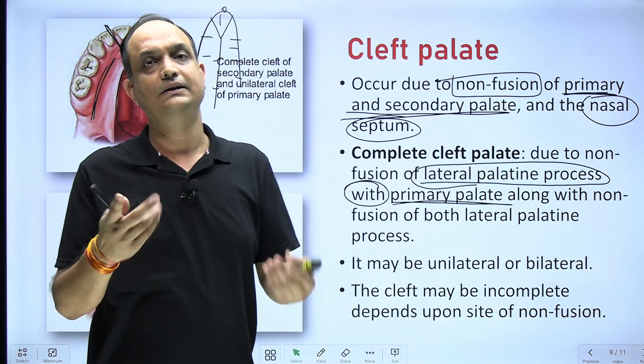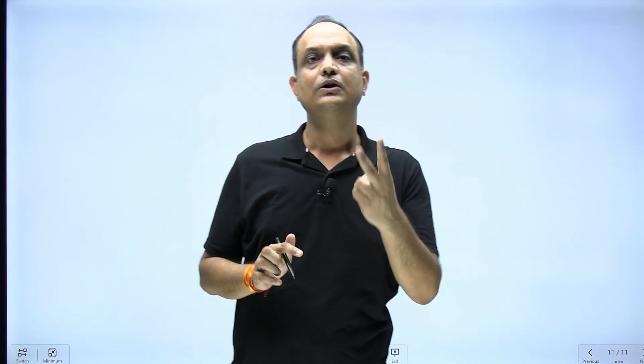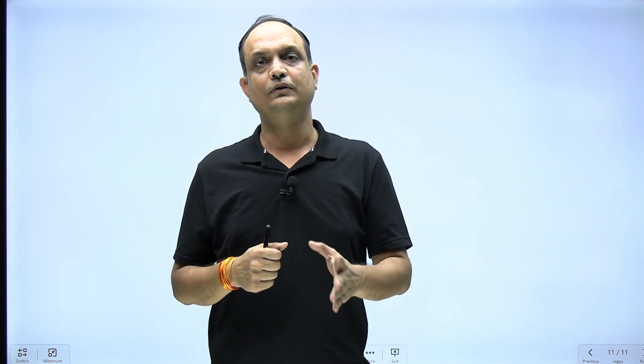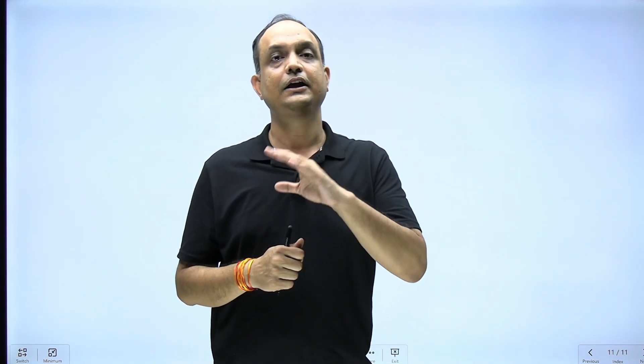In summary: a cleft occurs if there is failure in fusion of the two palatine shelves, failure in fusion of primary and secondary palate, or failure of the nasal septum to fuse with the superior aspect of the two horizontal shelves. The two sources needed are the intermaxillary segment from the frontonasal process and the two palatine shelves from the inner side of the maxillary process of the first pharyngeal arch. The ossified part forms the hard palate, the un-ossified part forms the soft palate, and failure of these three segments to fuse results in cleft palate.